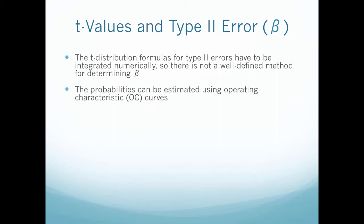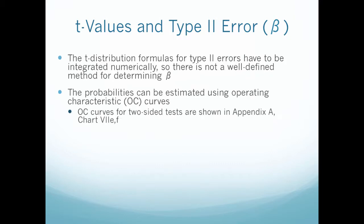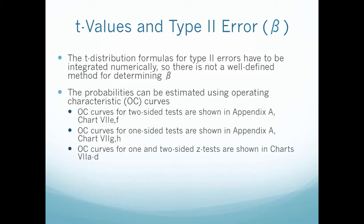The probability of beta can be characterized or estimated using operating characteristic curves. These curves are in your book in Appendix A, chart 7. The operating characteristic curves for two-sided tests for the t distribution are shown in Appendix A, chart 7E and F. For one-sided tests, they're in charts G and H. Keep in mind you have to pay attention—these are based on your t distribution and a one-sided or two-sided test and a level of alpha. Your operating characteristic curves for a one and two-sided z distribution are shown in chart 7A through D. So as you use these, really pay attention to which ones you're using.